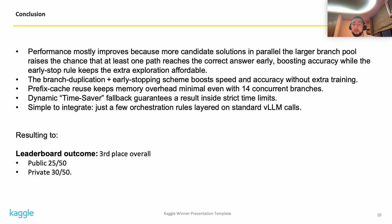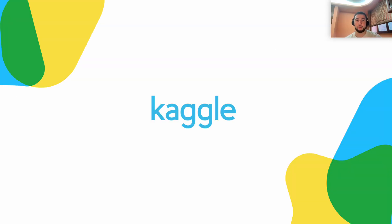To wrap it up: performance mainly improved because we generated multiple candidate solutions in parallel. With a larger branch pool, the chances increased that at least one branch would find the correct answer early, and early stopping made the exploration efficient. The combination of branch duplication and early stopping helped boost both speed and accuracy without any extra training. Prefix cache reuse kept memory usage low even when running 14 branches at once, and the time-saver fallback ensured we could always return a result within the time limit. This method was easy to integrate, requiring just a few control rules on top of standard VLM calls, leading to a final result of third place — 25 out of 50 on the public set and 30 out of 50 on the private leaderboard. Thank you.